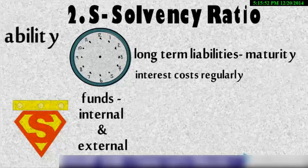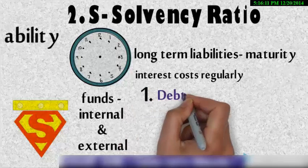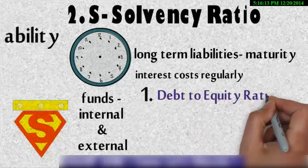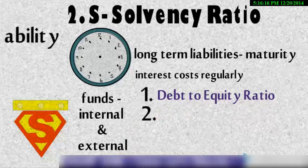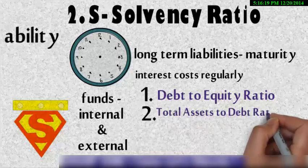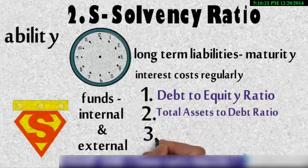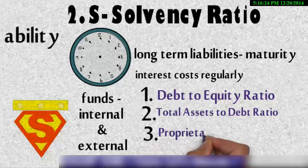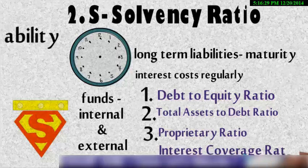It also tells us about the composition of the internal funds and the external funds. Now internal funds is the proprietor contribution or the initial investment. An external can be defined as the borrowings and investment. Now this solvency ratio is further classified or divided into four: first debt to equity ratio, second total assets to debt ratio, third is proprietary ratio and the fourth and the last one is the interest coverage ratio.